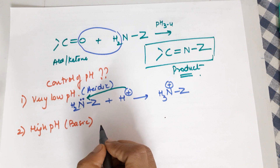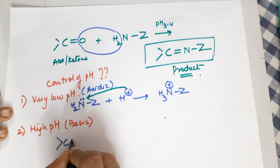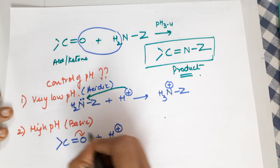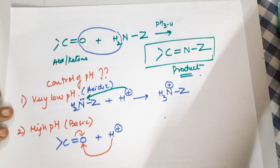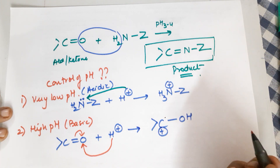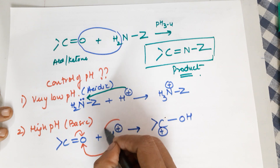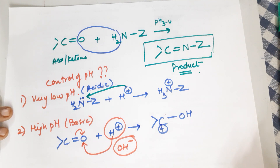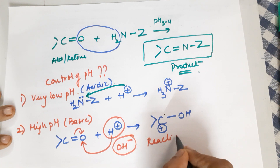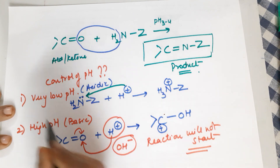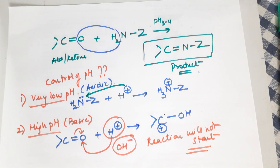If the medium is basic, then there won't be any H+ available. The first step of the mechanism is protonation of the carbonyl group by a proton to form a carbocation. In the presence of OH⁻ (base), you will not get the carbocation formed and the reaction will not start. So you can neither have a very low pH nor a very high pH.